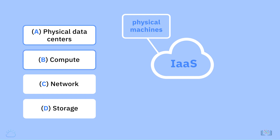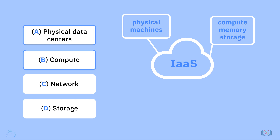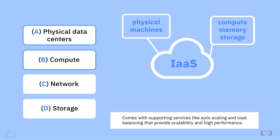Compute: IaaS providers manage the hypervisors, and end users programmatically provision virtual instances with desired amounts of compute, memory, and storage resources. Cloud compute typically comes with supporting services like auto-scaling and load balancing, that provide scalability and high performance.